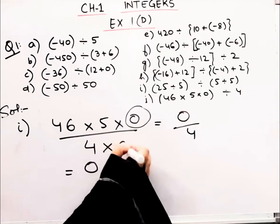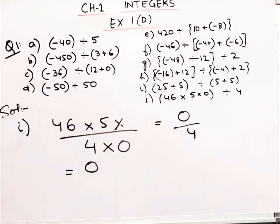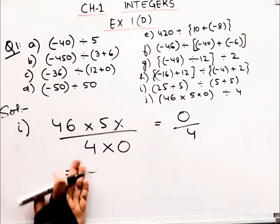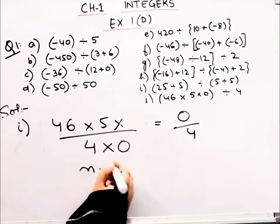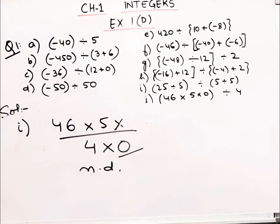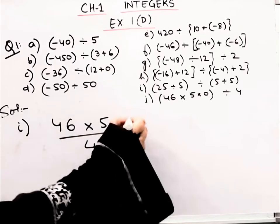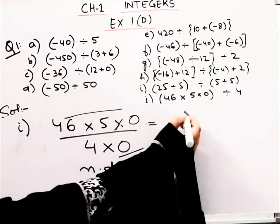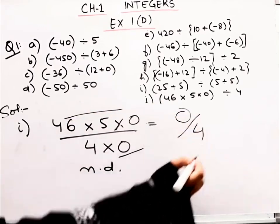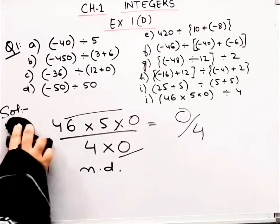But if it was like this, if 0 was in the denominator instead of numerator, then what would your answer be? The answer is not defined. Clear? When zero is in the denominator, there is no answer. But if the numerator, the thing on top becomes zero, if I divide 0 into 4 parts, what happened? It became zero. Clear?